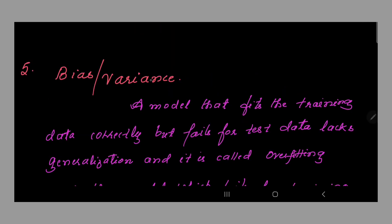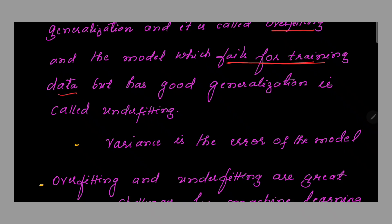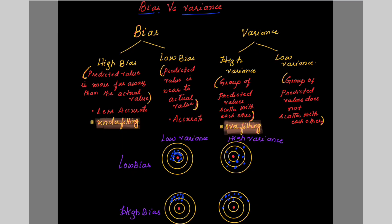One more important challenge is bias and variance. A model that fits the training data correctly but fails for the test data lacks generalization and is called overfitting. A model which fails for training data but has good generalization is called underfitting. Overfitting and underfitting are great challenges for machine learning, and bias and variance is the fourth type of challenge.